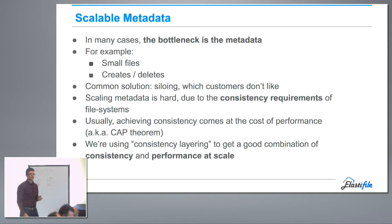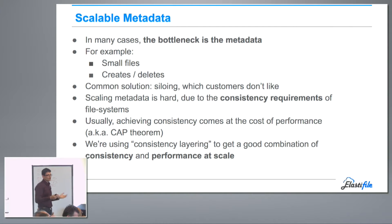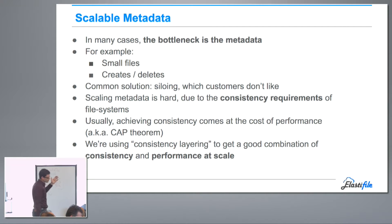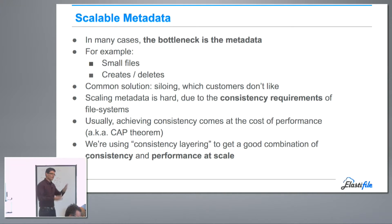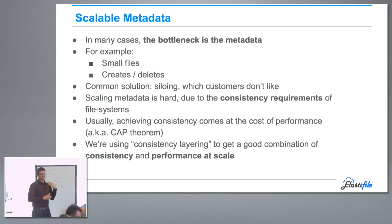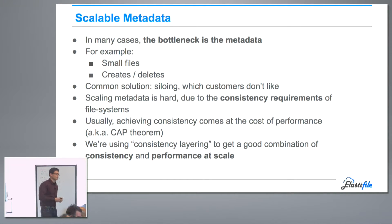This is the famous CAP theorem. But not all operations are equal in terms of how you want them to behave. We've created a nice layering of different operations which get a good combination of trade-offs between consistency and performance. Everything we do is 100% consistent — it's just a question of what happens when you can't reach the node. Do you define it as failure and pay some price for recovery, or do you do something else?